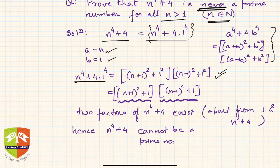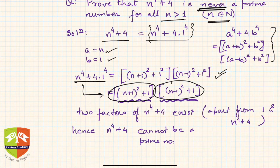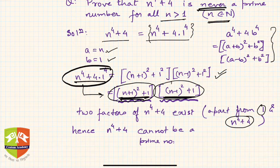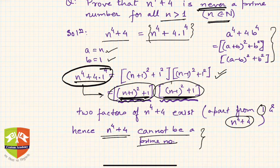Hence this can be factored into two factors: (n plus 1) whole squared plus 1, and (n minus 1) whole squared plus 1. There are two factors over and above 1 and the expression itself, so anything which has more than two factors will never be a prime. Whatever be the value of n, you will always find these two factors, and hence n to the power 4 plus 4 cannot be a prime number. Using Sophie Germain Identity, we could prove that this expression will never be a prime if n is greater than 1.